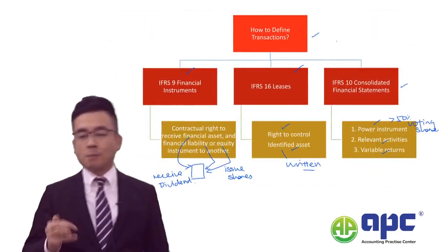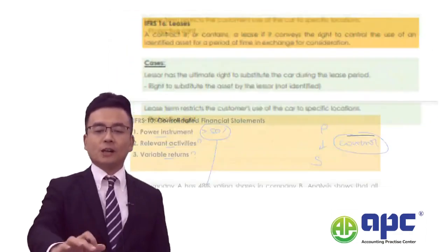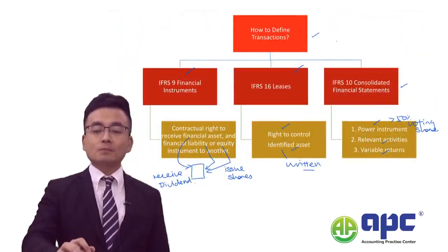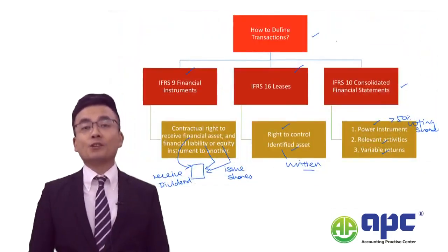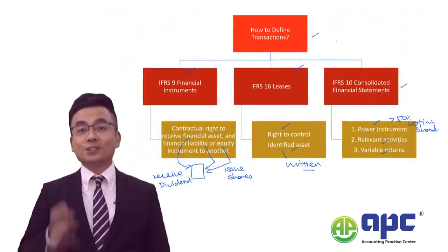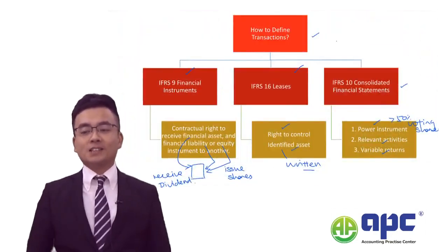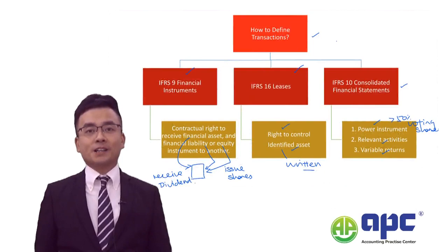The examiner is not testing you about variable returns or relevant activities — there is no point dumping knowledge about those in the actual exam. Your main focus should be on the power instrument: how to define that 50% is according to the past voting costs from previous annual general meetings from the shareholders. Make sure that you are ready to tackle the ACCA SBR exam.